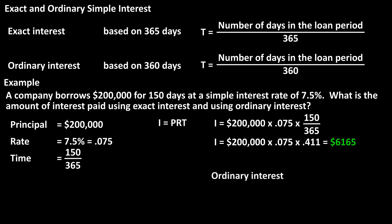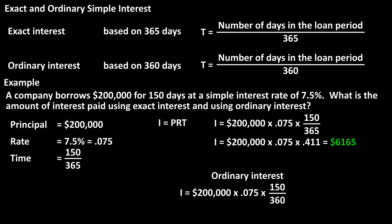Now for ordinary interest. We use the same formula — I equals P times R times T. We have $200,000 times 0.075, and for time we have 150 days over 360 days, since we are using ordinary interest. The division of 150 over 360 calculates to 0.417 rounded off. So now we have $200,000 times 0.075 times 0.417, which calculates out to $6,255. Comparing, we have $6,165 in interest using exact interest and $6,255 using ordinary interest — more interest with ordinary interest. This makes sense because the fraction or decimal value for ordinary interest will always be slightly larger than exact interest, because you are dividing by a smaller number.